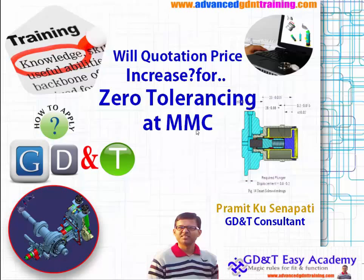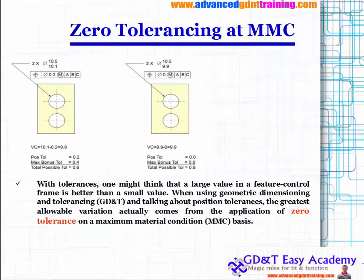So we need to understand what Zero Tolerancing at MMC is and why we use it. Zero Tolerancing at MMC in GD&T is one of the most neglected concepts, and I will be discussing it in this tips and tricks. Most people think that Zero Tolerancing means you do not have any tolerance at all available in your drafting sheet. If you look at the left and right side drawings, you can see the GD&T callout. The MMC value for positioning tolerance is 0.2 on the left side, whereas on the right side the MMC value for positioning this hole is absolutely zero.